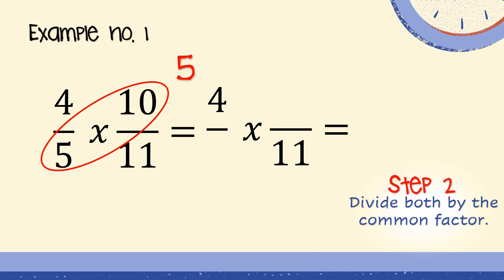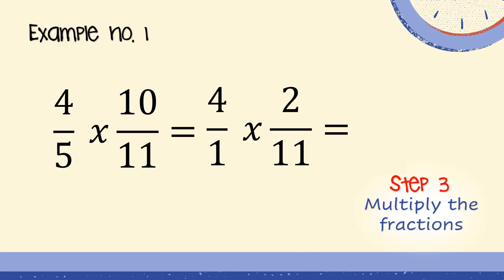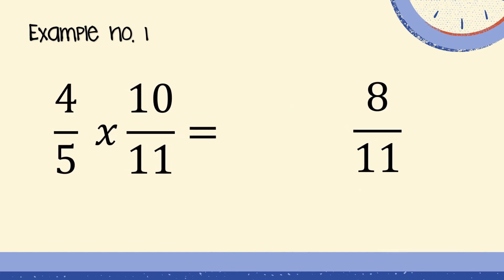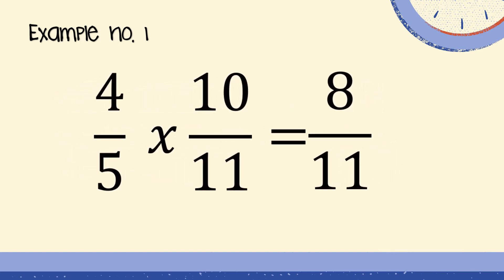Step two: divide both the numerator and denominator by the common factor. Ten divided by five equals two, and five divided by five equals one. Step three: multiply the fractions — four times two equals eight, and one times eleven equals eleven. Therefore, four-fifths times ten-eleventh equals eight-eleventh, which is already in its lowest term.